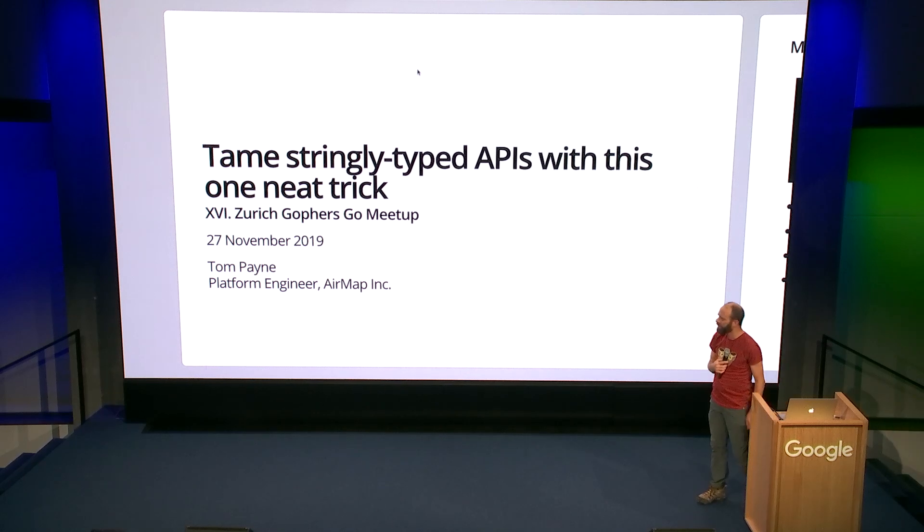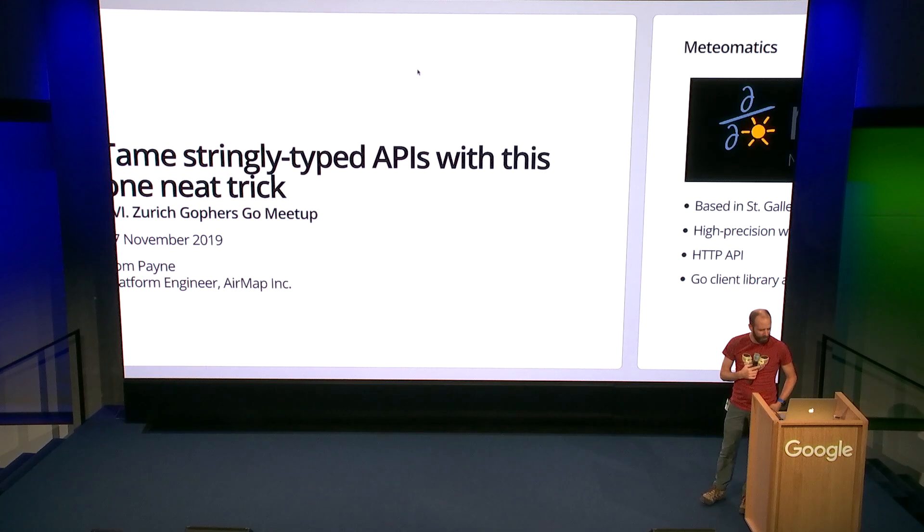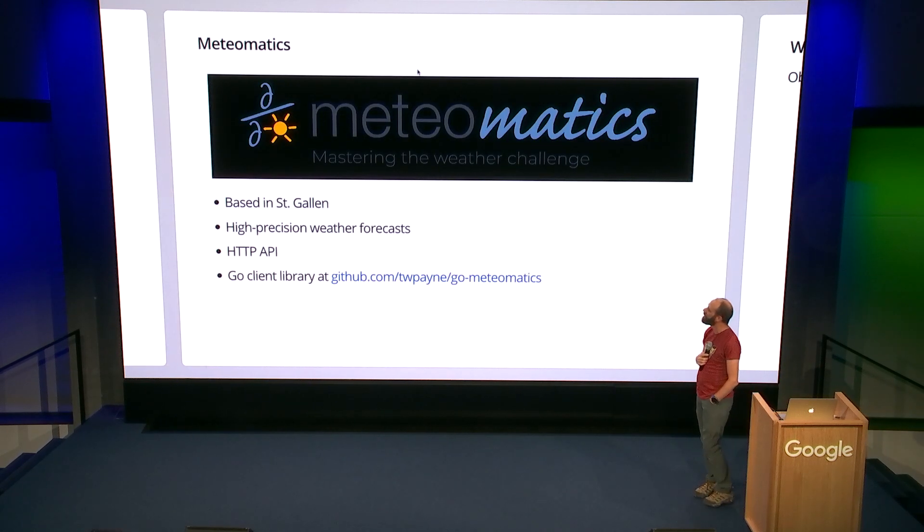This is a project that I did for a company called MeteoMatics. It's not something I did at work. They have a very cool weather forecasting system. They've been around for about six years, based in St. Gallen. They do high-precision weather forecasts, and they have a nice HTTP API, which we'll talk about. I know the founder. They have a lot of client libraries for different languages. They didn't have a Go one, so I spent a weekend to write them a Go client library, which is open source at that URL.